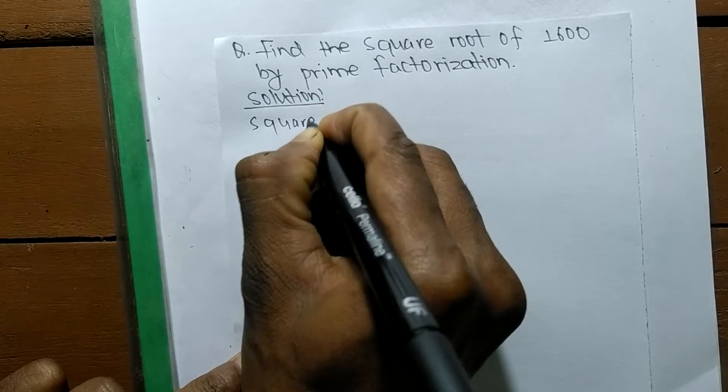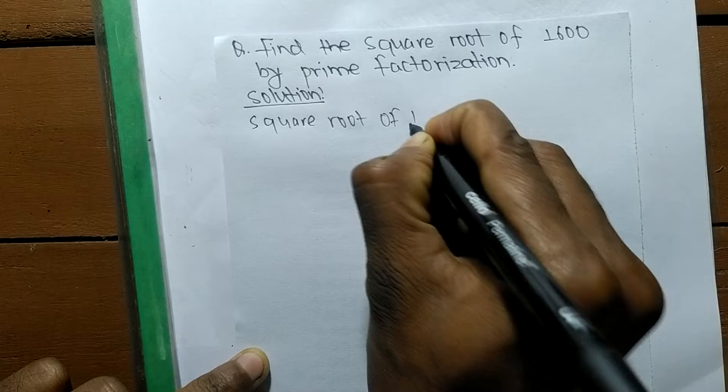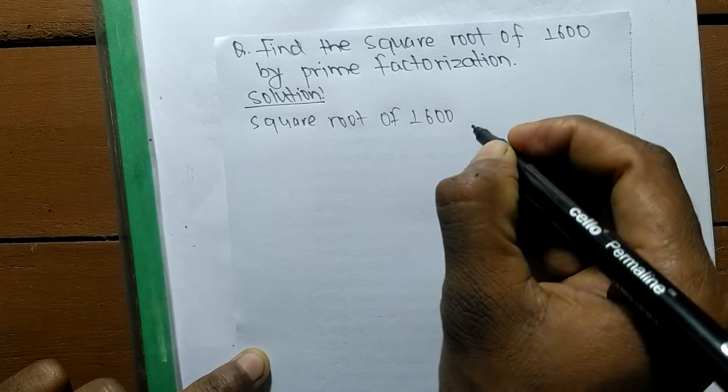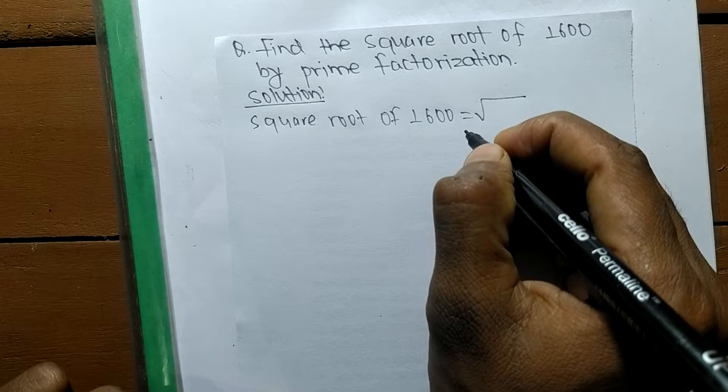Square root of 1600. This type of sign is the sign of a square root, and we are finding the square root of 1600.